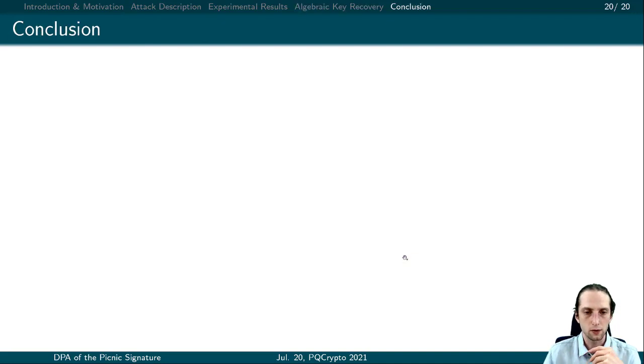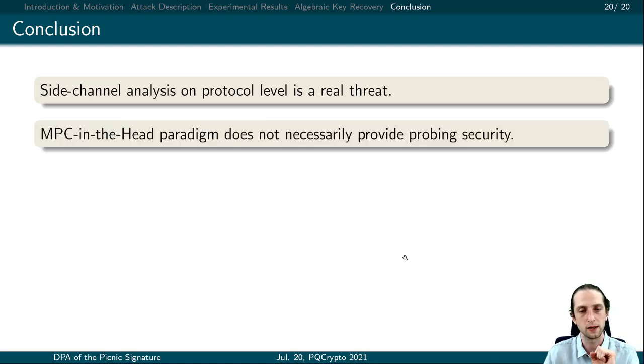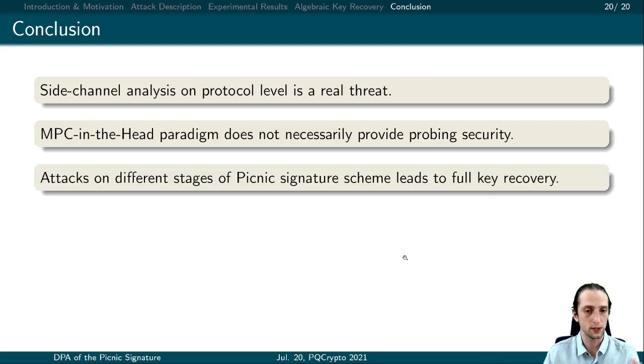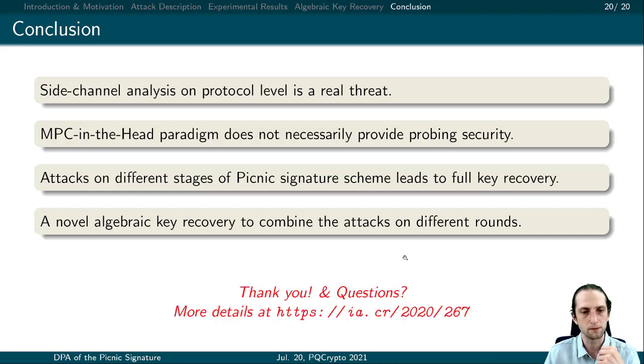In conclusion, what we have shown is that side-channel analysis on protocol level is a real threat. MPC-in-the-head does not necessarily provide security, since the open values give the adversary additional information. What we have shown with these two attacks on two different stages of Picnic signature scheme leads us to full key recovery. Additionally, what we have shown is a novel algebraic key recovery to combine these attacks.